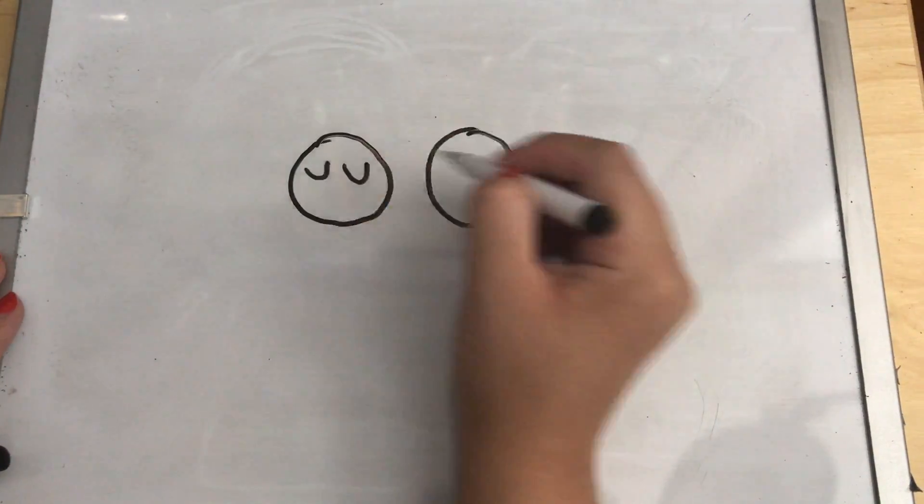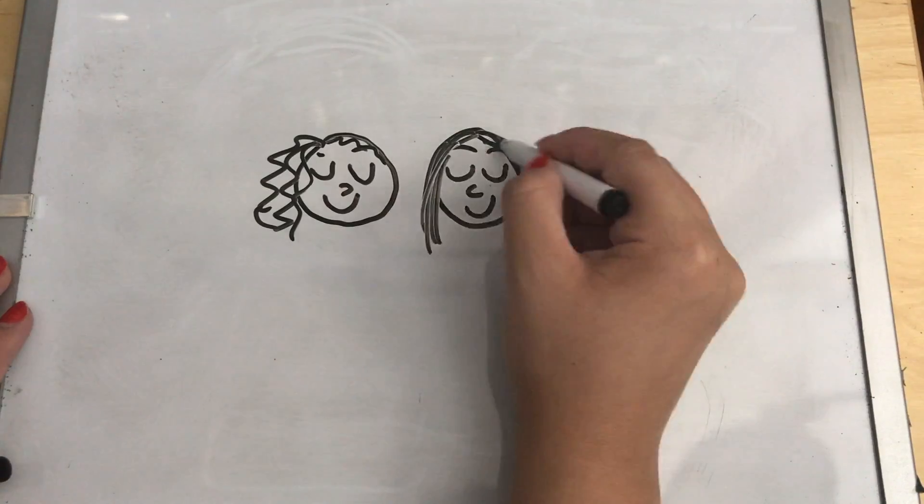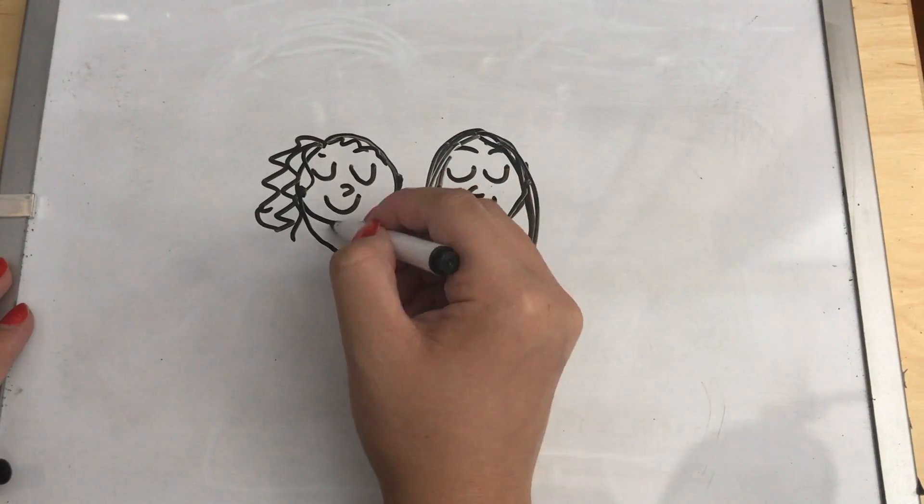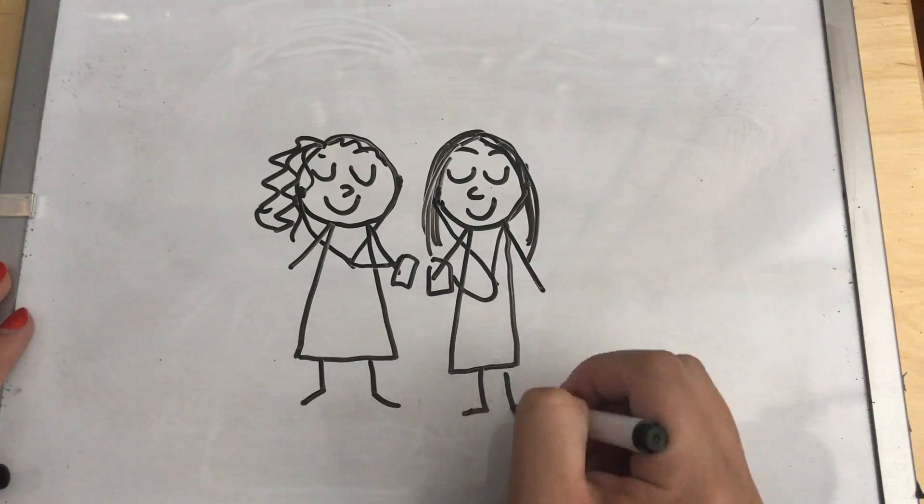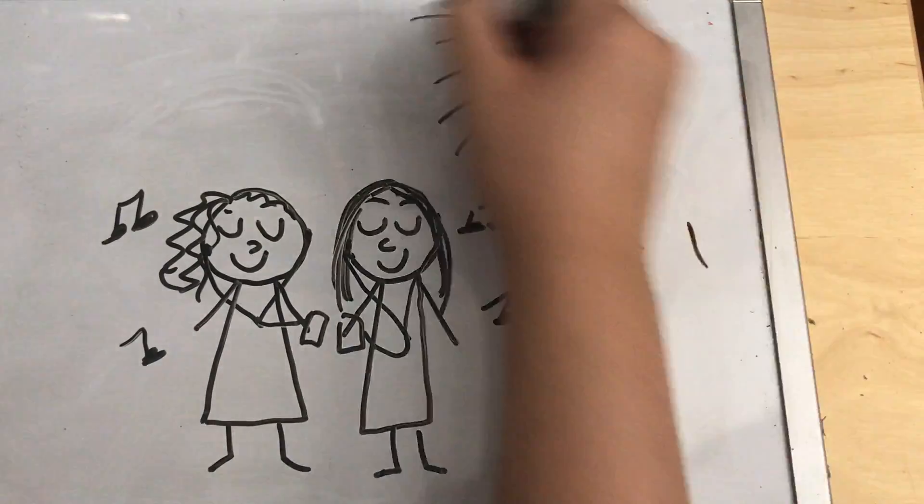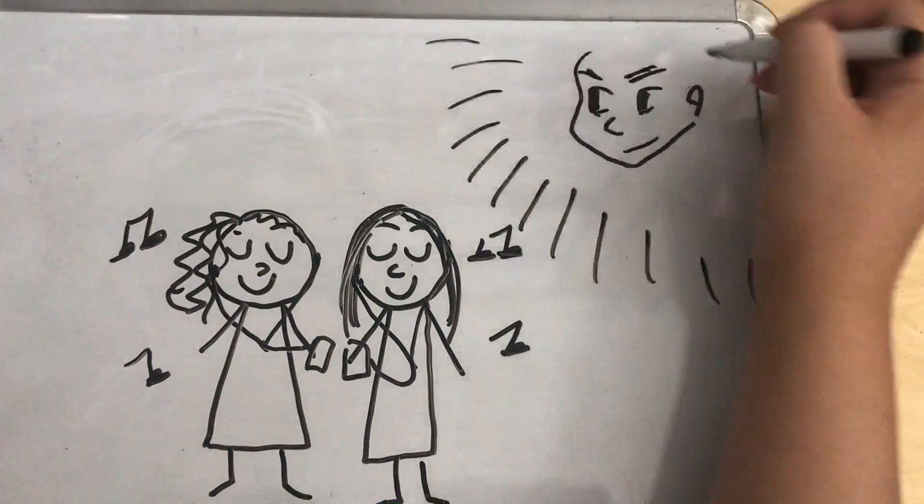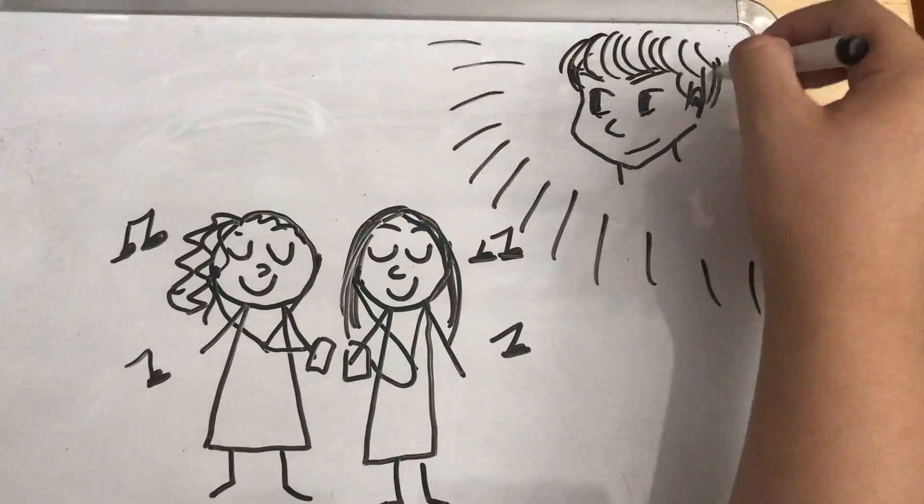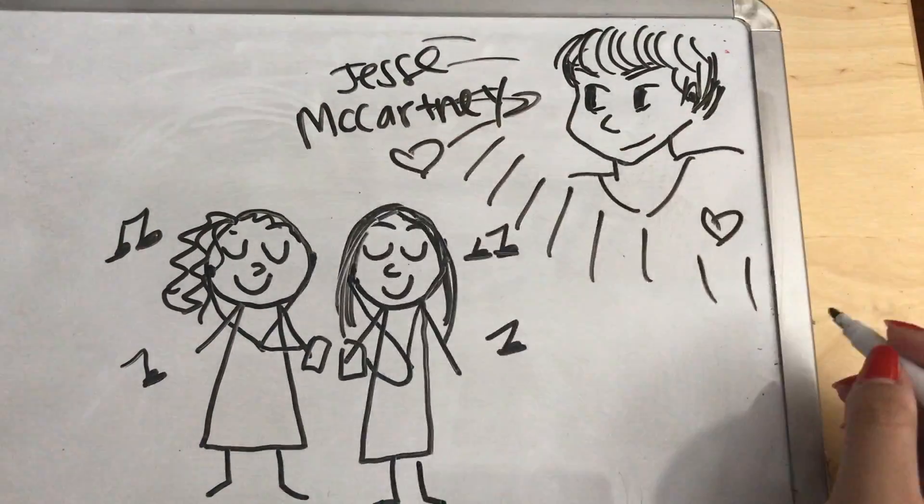As we both started to get a little older we both started to really get into music. On bus rides home from school trips I remember listening to the Pokemon theme song together and remembering all the words. We'd even listen to Jesse McCartney's 'Leavin' on her small pink phone. You could hear the pixelated - you can't even really hear pixels but you could hear them in this phone. We loved him.